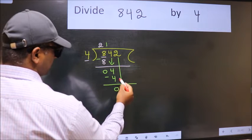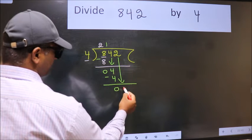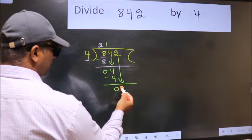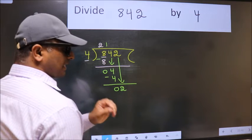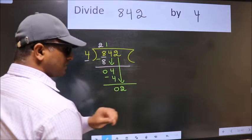After this, bring down the beside number. So, 2 down. After this step, the mistake happens. And the mistake is this.